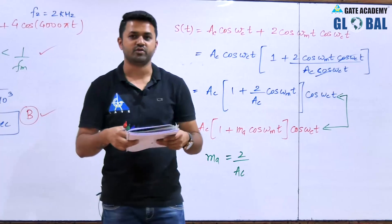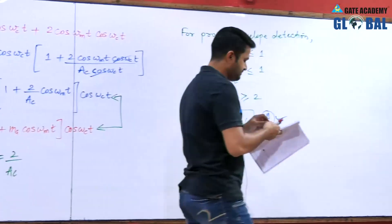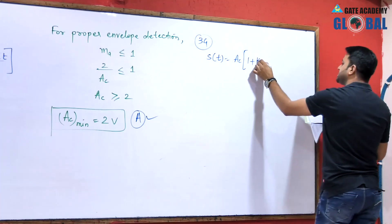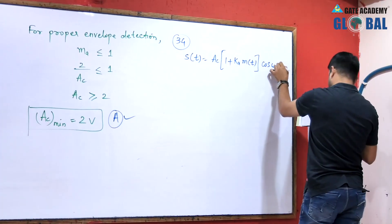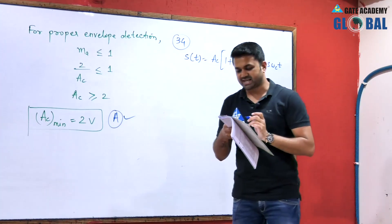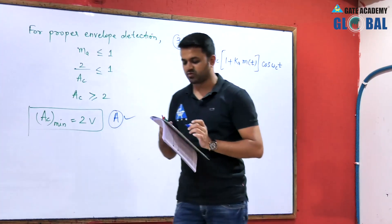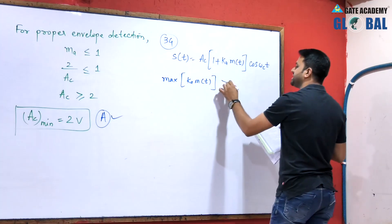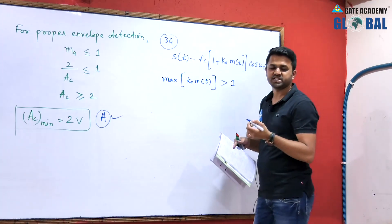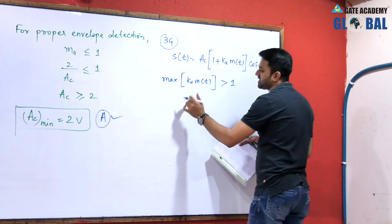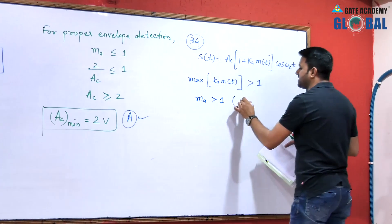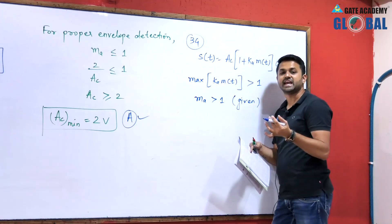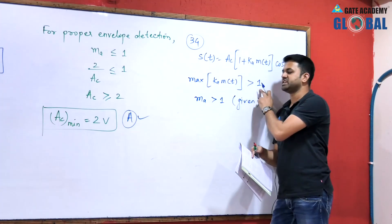Question number 34: The AM waveform s(t) = ac·[1 + k·m(t)]·cos(ωc·t) is fed to an ideal envelope detector. The maximum magnitude of k·m(t) is greater than 1. The modulation index is defined as the maximum value of k·m(t). Here k is a constant, so the maximum value of m(t) multiplied by k gives the modulation index, and it is given that this term is greater than 1 — meaning the modulation index ma > 1.